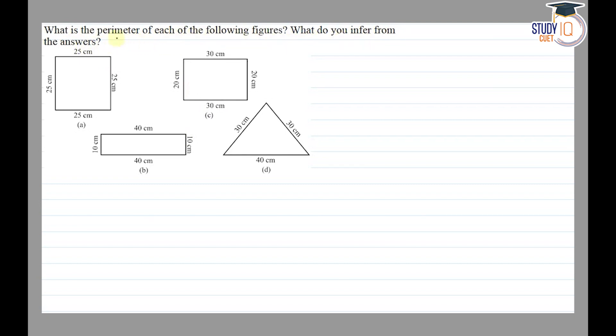We need to find each figure's perimeter. First, we take part (a). The perimeter, which we represent as P, so this is our perimeter of square. Its formula is 4 into side, and the side given is 25.